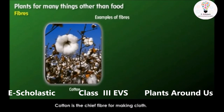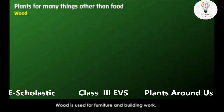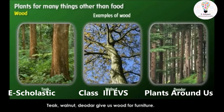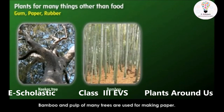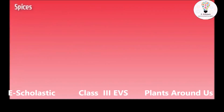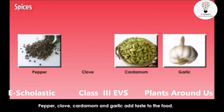Cotton is the chief fiber for making cloth. Jute is used to make gunny bags, carpets, curtains, etc. Wood is used for furniture and building work — teak, walnut, and deodar give us wood for furniture, and we also get firewood for cooking. We get gum from the keeker tree. Bamboo and pulp of many trees are used for making paper. We get rubber from the rubber tree. We also get spices from plants — pepper, clove, cardamom, and garlic add taste to food.